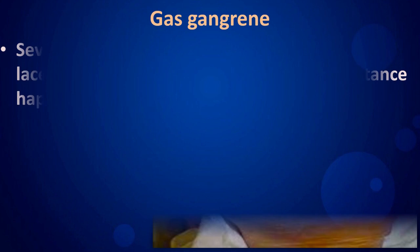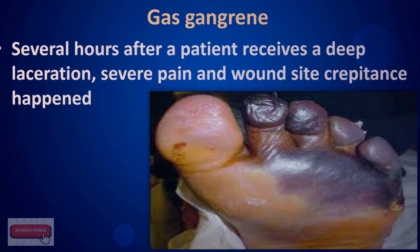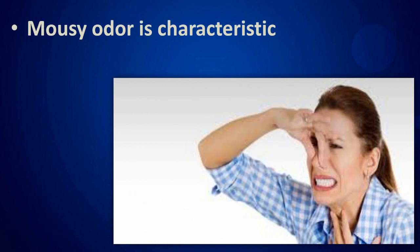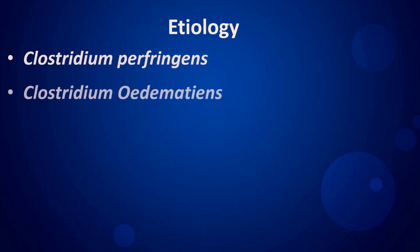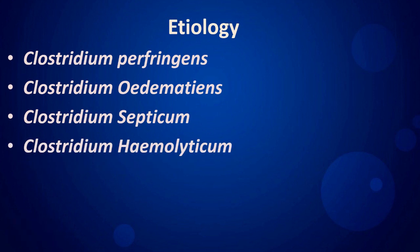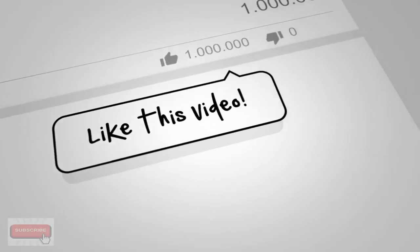Gas gangrene: several hours after a patient receives a deep laceration, severe pain and wound-site crepitance occur. A mousy odor is characteristic. Etiology includes Clostridium perfringens, Clostridium oedematiens, Clostridium septicum, and Clostridium histolyticum.